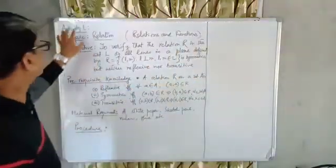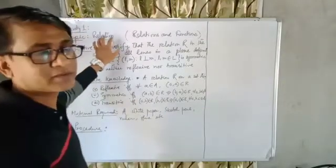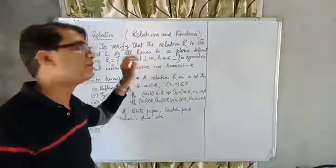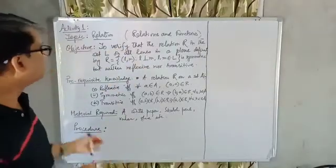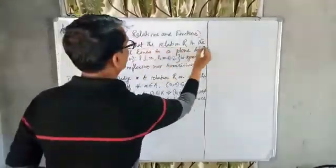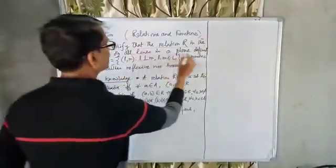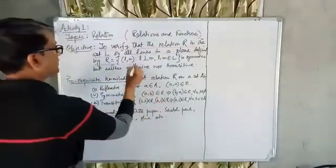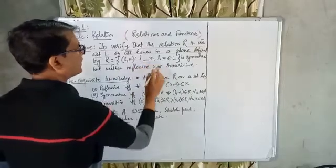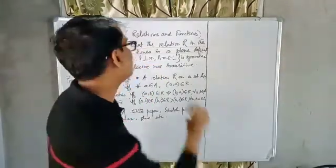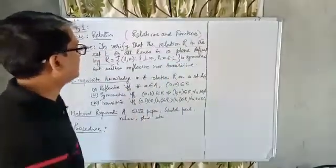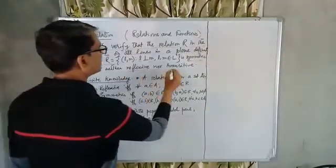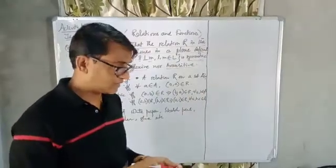The topic is Activity 1, taken from Relations and Functions. The objective of this activity is to verify that the relation R on the set L of all lines in a plane, defined by R = {(L, M) such that L is perpendicular to M, where L and M belong to the set L}, is symmetric but neither reflexive nor transitive.